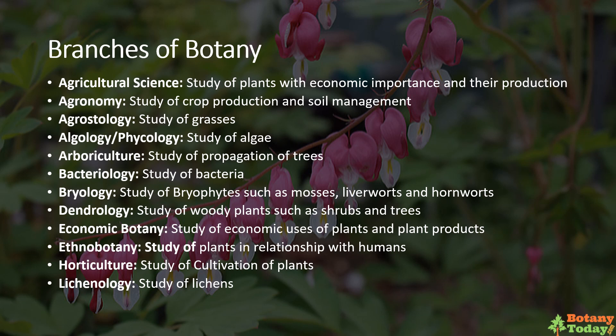Agricultural science is the branch of botany that deals with the study of those plants that are of economic importance and their production. Agronomy is the branch of agricultural science that deals with the production of crops and management of soil. Agrostology is the study of grasses.